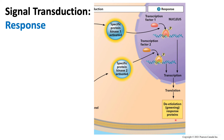Protein kinase number 2 phosphorylates proteins that have already been translated. This response results in de-etiolation, which is the greening response. After receiving the signal of light and this entire process has occurred, the plant becomes aware that it is receiving sunlight, so it starts producing leaves and chloroplasts, and the stem elongation slows down because that is no longer required.